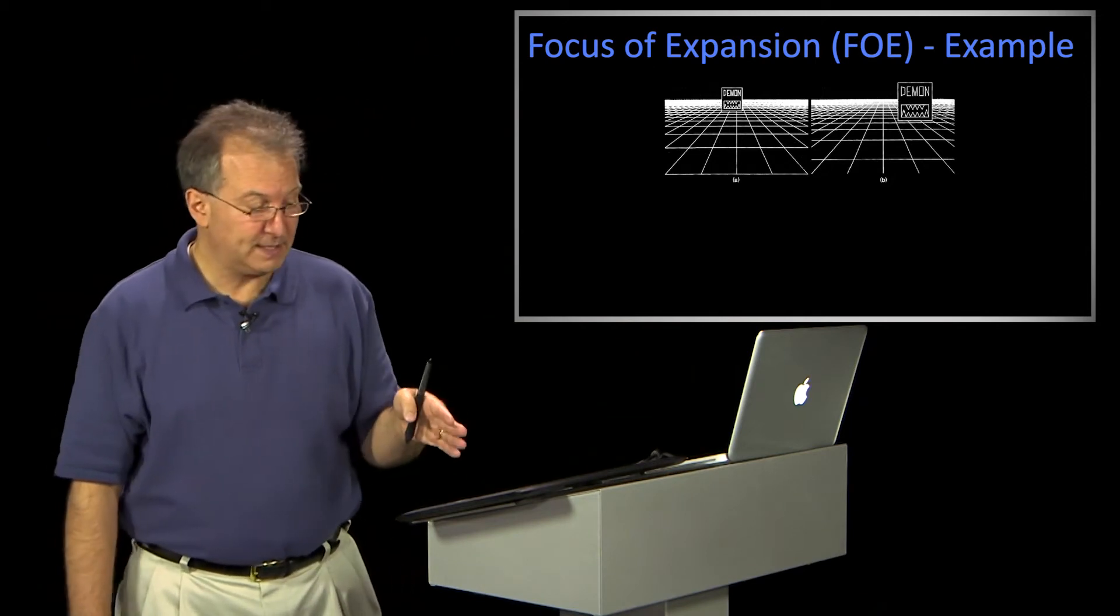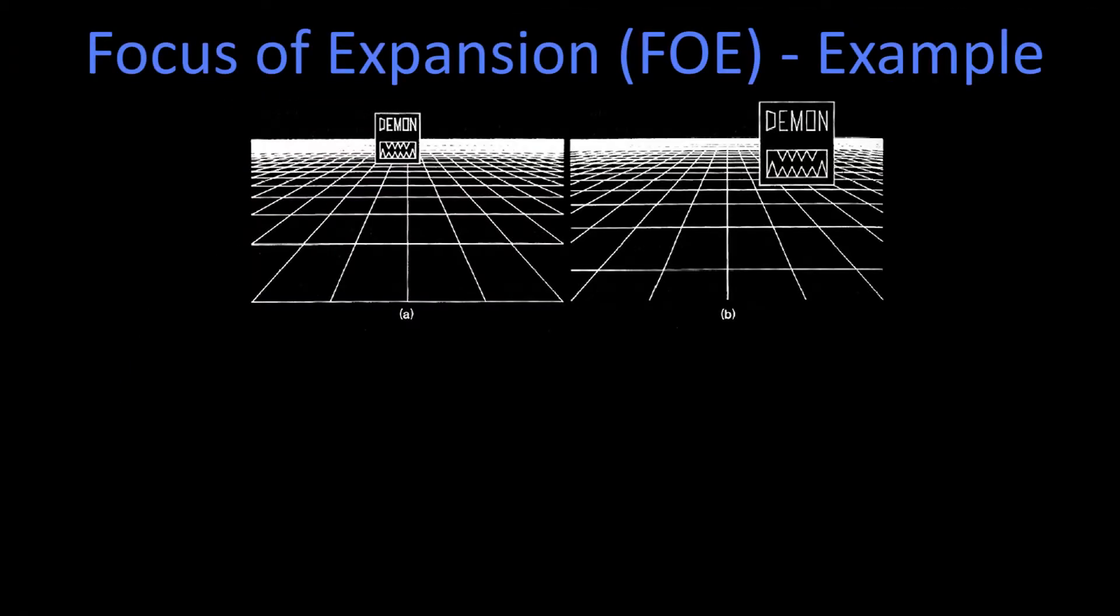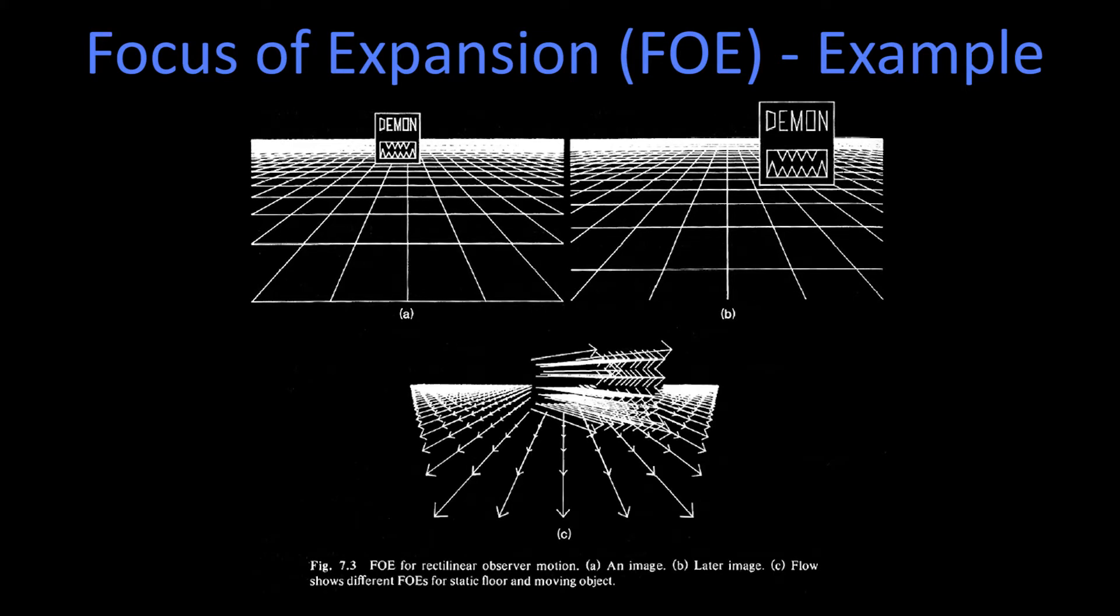So the idea here is image on the left and another image on the right. And the question is, taking a time one and time two, how are things moving? Well, if I just look at these two pictures, it's a little hard to tell. But if I give you the flow field, it's very clear what's going on.